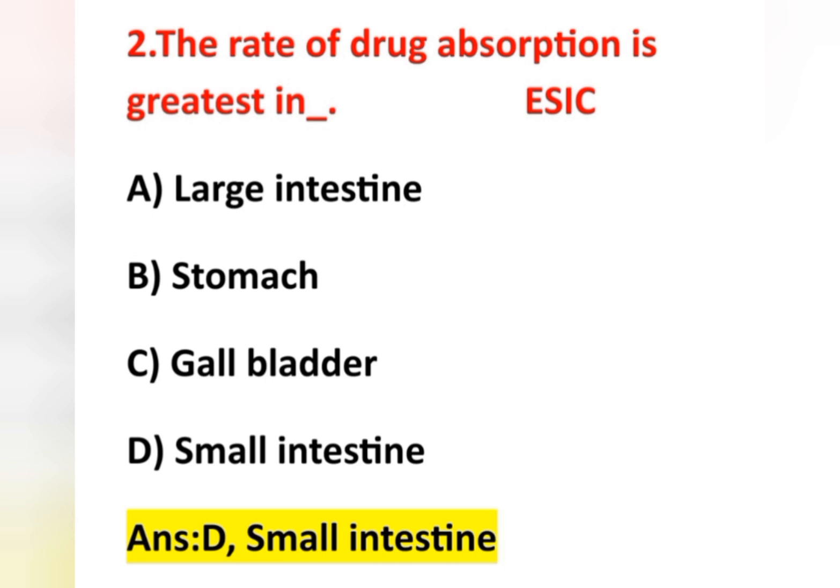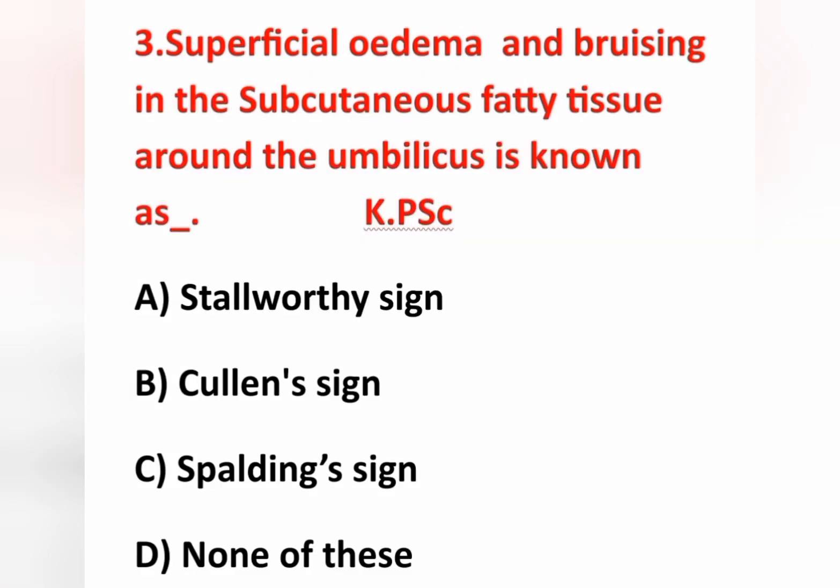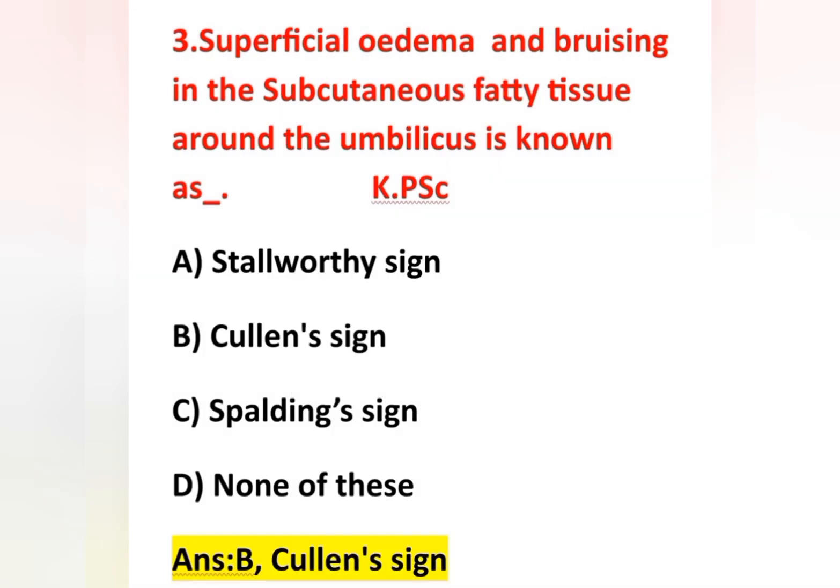Third question: superficial edema and bruising in the subcutaneous fatty tissue around the umbilicus is known as — option A Stollworthy sign, option B Cullen's sign, option C Spalding sign, option D none of these. The answer is option B. This is one of the characteristic features of Cullen's sign. Cullen's sign and Turner's sign are characteristic features of acute pancreatitis.